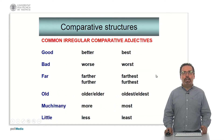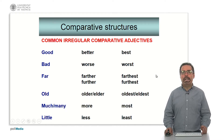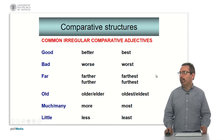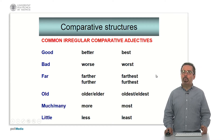We must remember some irregular comparative adjectives. The most typical ones in English are: good, bad, far, old, much, many, and little. The first column shows the irregular comparative and the second shows the irregular superlative. Between 'older' and 'elder' there is a difference: 'older' is the general adjective, while 'elder' is normally restricted to the age of people.